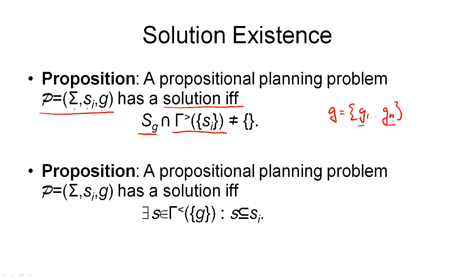But I can also turn this around. Suppose I could show that there is one goal condition in here that cannot be achieved — one of the goal conditions is not reachable. If I can show that one of the goal conditions isn't reachable, then that means there can be no state in which this goal condition is true, which means there can be no state that constitutes a solution. So the planning problem does not have a solution. And that is exactly the kind of insight that the planning graph will give us.